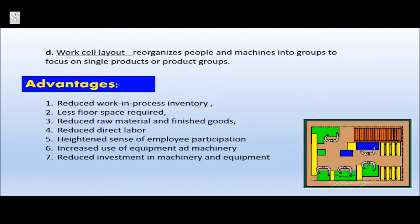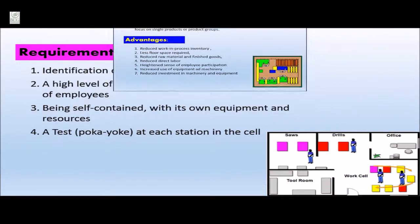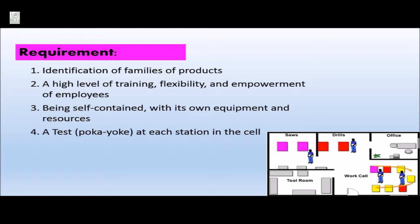The last type of service layout is work cell layout, which reorganizes people and machines into groups to focus on single products or product groups. The advantages of work cells include reduced work-in-process inventory, less floor space required, reduced raw material and finished goods, reduced direct labor, heightened sense of employee participation, increased use of equipment and machinery, and reduced investment in machinery and equipment. Requirements of work cells include identification of families of products, a high level of training, flexibility and empowerment of employees, being self-contained with its own equipment and resources, and a test at each station in the cell.